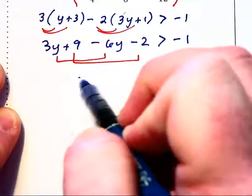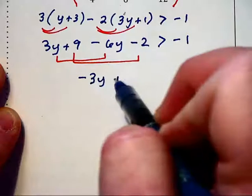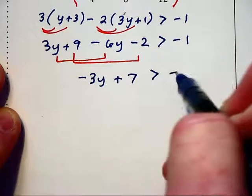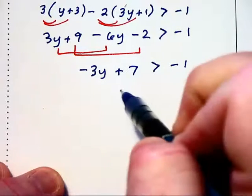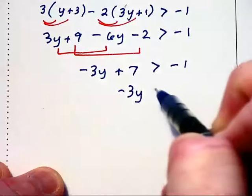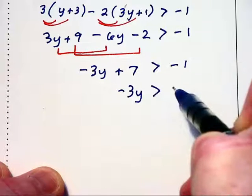This leaves us with negative 3y plus 7 is greater than negative 1. And then we subtract 7 on each side. This gives us negative 3y is greater than negative 8.